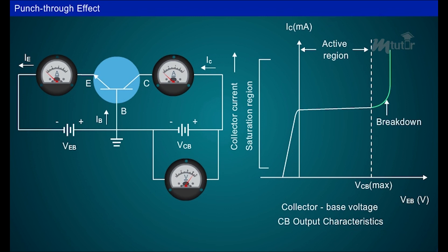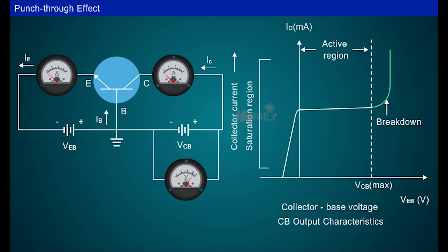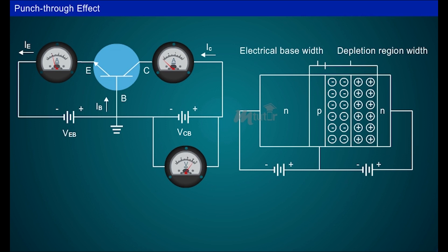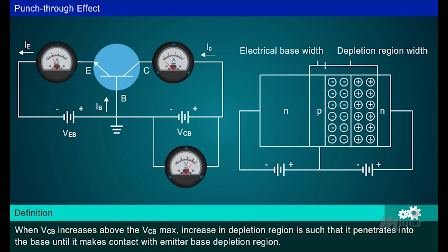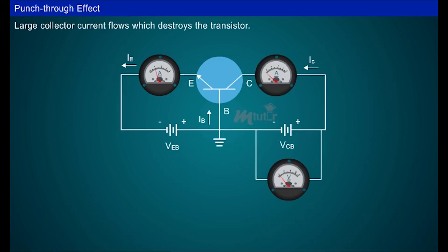The curves shown at the right side of dotted line represent the breakdown condition. When collector to base voltage increases, width of the depletion region at the junction increases. When VCB increases above the VCB max, increase in depletion region is such that it penetrates into the base until it makes contact with emitter base depletion region. This condition is called punch-through or reach-through effect. When this situation occurs, breakdown occurs. That is, large collector current flows which destroys the transistor.